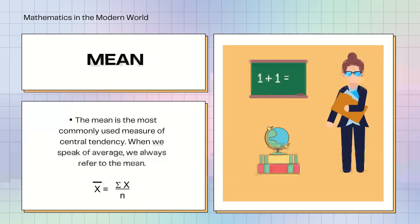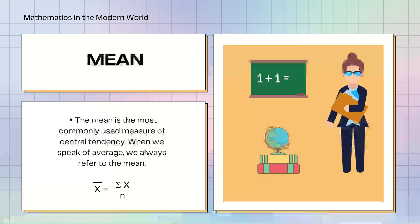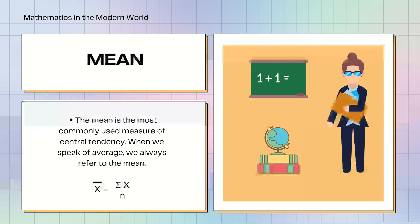Mean. The mean is the most commonly used measure of central tendency. When we speak of average, we always refer to the mean. We will be using the formula of the summation of x over n.